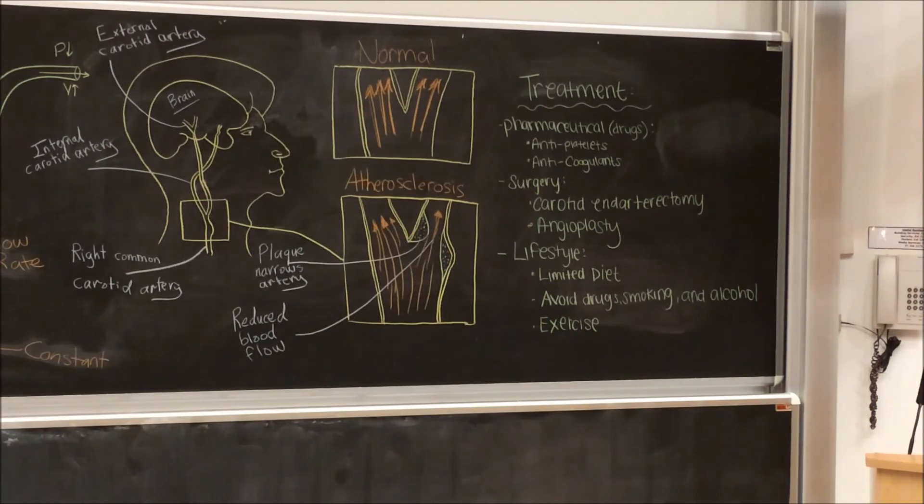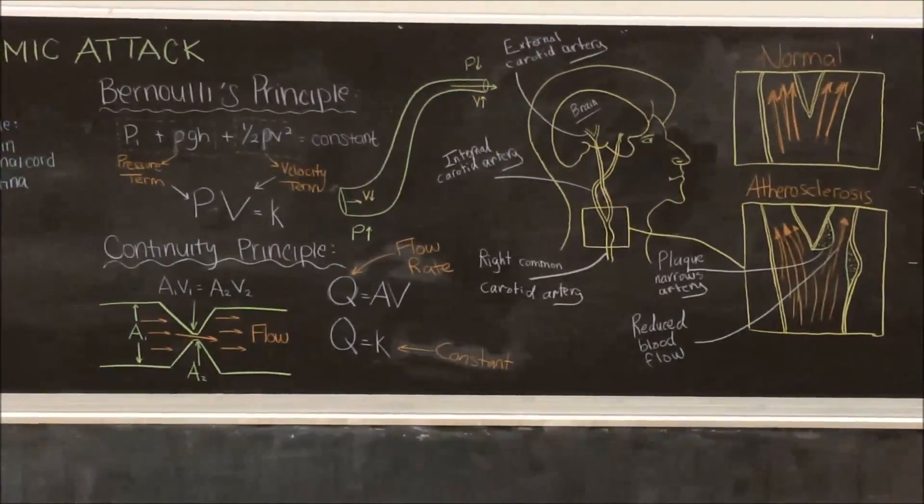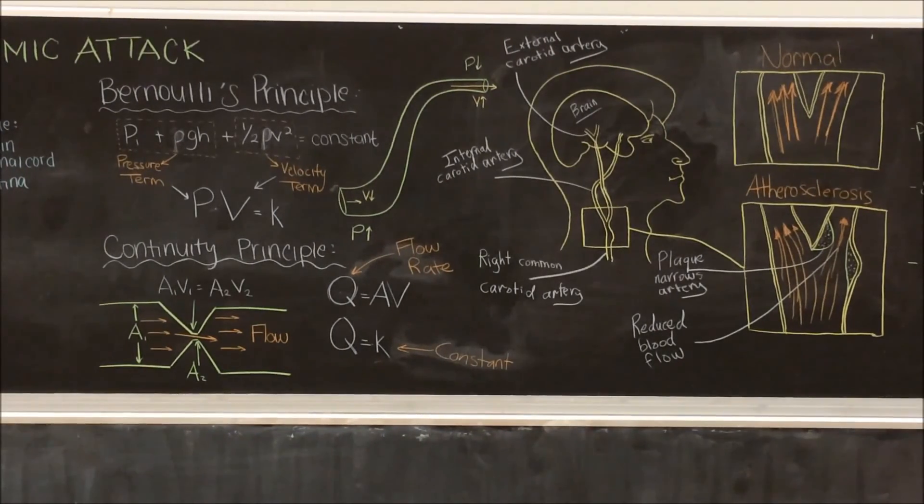Now, what to do if experienced? Transient ischemic attacks are often diagnosed as an emergency in regards to the process of becoming a stroke. Consult your physician as soon as the mentioned symptoms start to show. Be prepared to discuss your lifestyle habits such as smoking, medical history, family history, and the symptoms.